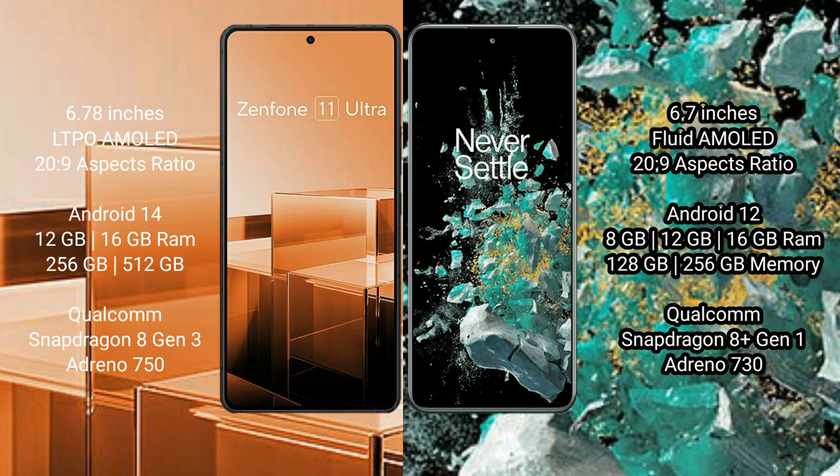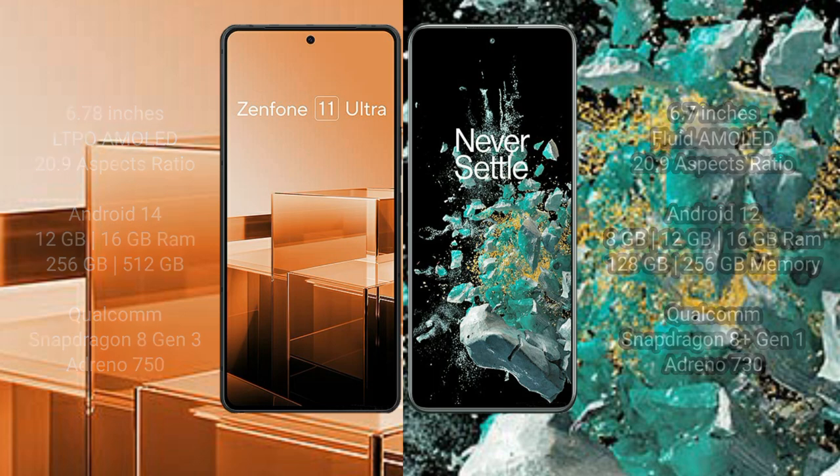Asus Zenfone 11 Ultra comes with 12GB and 16GB RAM, 256GB internal storage, Qualcomm Snapdragon 8 Gen 3 processor, with Adreno 750 GPU. OnePlus 10T comes with 8GB, 12GB, and 16GB RAM, 128GB and 256GB internal storage, Qualcomm Snapdragon 8 Gen 1 processor, with Adreno 730 GPU.